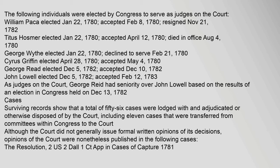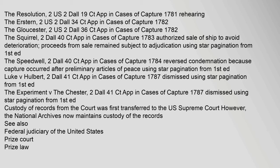Surviving records show that a total of 56 cases were lodged with and adjudicated or otherwise disposed of by the Court, including 11 cases transferred from committees within Congress. Although the Court did not generally issue formal written opinions, opinions were nonetheless published in the following cases: The Resolution, 2 U.S. (2 Dall.) 1 (1781); The Resolution, 2 U.S. (2 Dall.) 19 (1781); Rehearing — The Ersterne, 2 U.S. (2 Dall.) 34 (1782); The Gloucester, 2 U.S. (2 Dall.) 36 (1782).